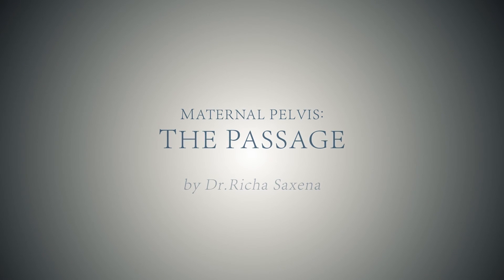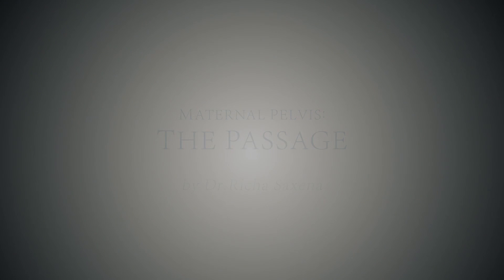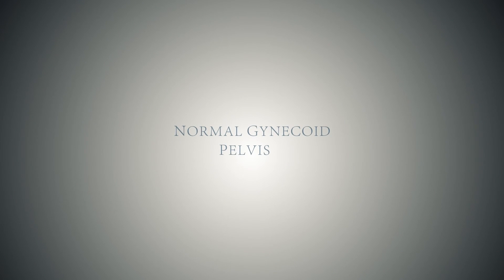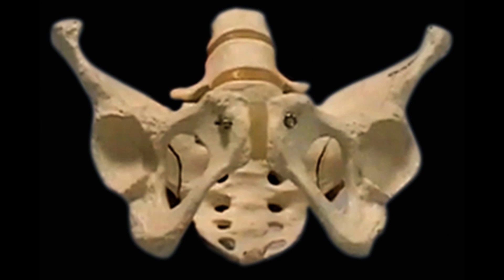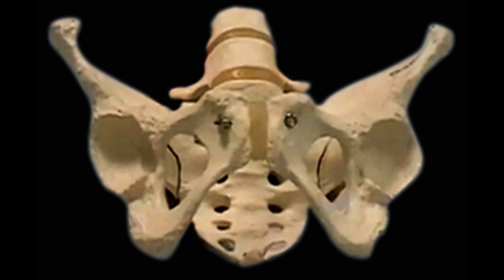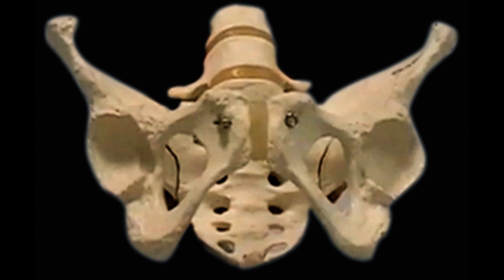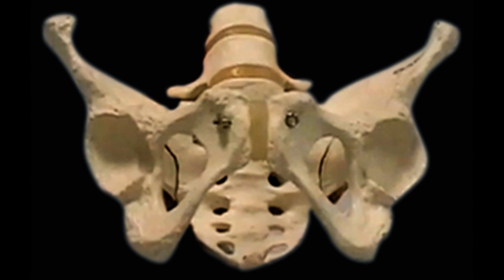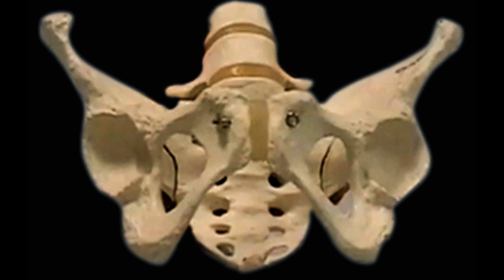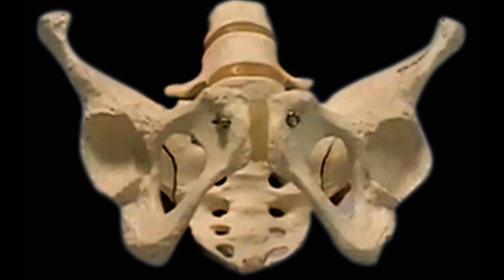Maternal pelvis: the passage. This is the ventral or anterior view of the normal gynecoid female pelvis. This helps in forming the bony canal through which the fetus passes during the normal vaginal mechanism of childbirth.